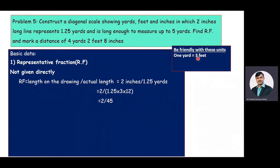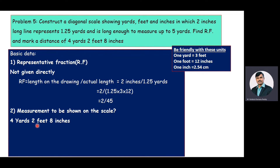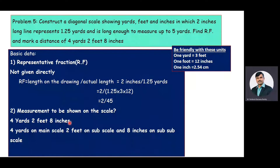One yard equals 3 feet, one foot equals 12 inches, and one inch equals 2.54 centimeters. The measurement to be shown on the scale is 4 yards 2 feet and 8 inches — that is, 4 yards on the main scale, 2 feet on the subscale, and 8 inches on the sub-subscale. Since we have a relationship between three different units, we are going to construct a diagonal scale.